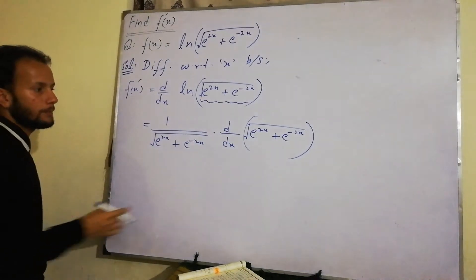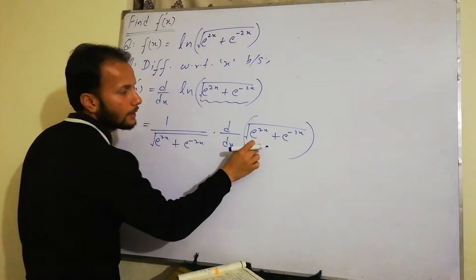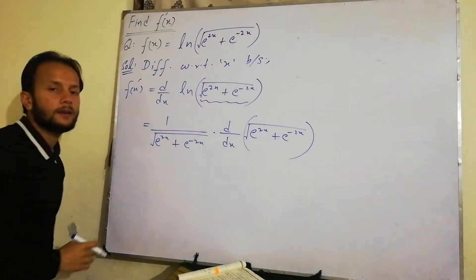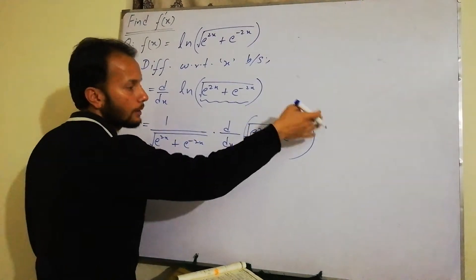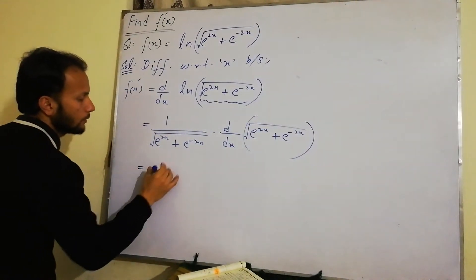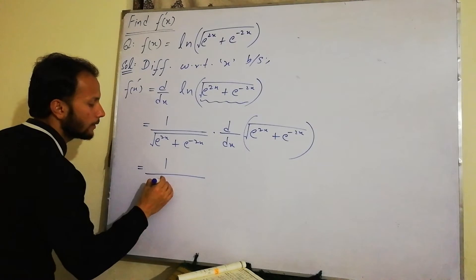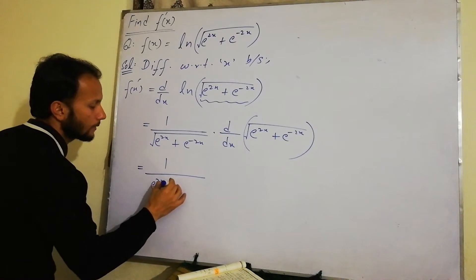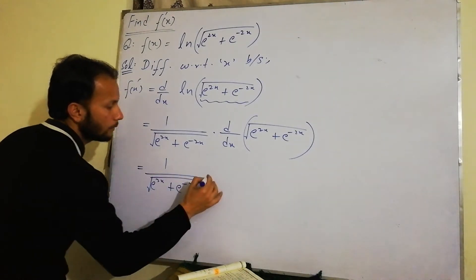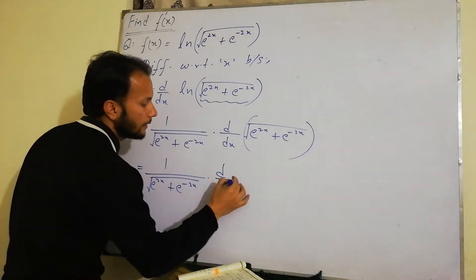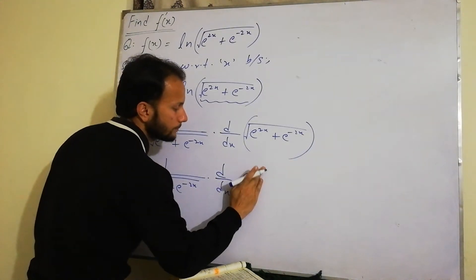The next step: this is in radical form, but we can write it in power form as power 1 by 2. So we have 1 divided by (e to the power 2x plus e to the power minus 2x, under root), then d by dx of e to the power 2x plus e to the power minus 2x.